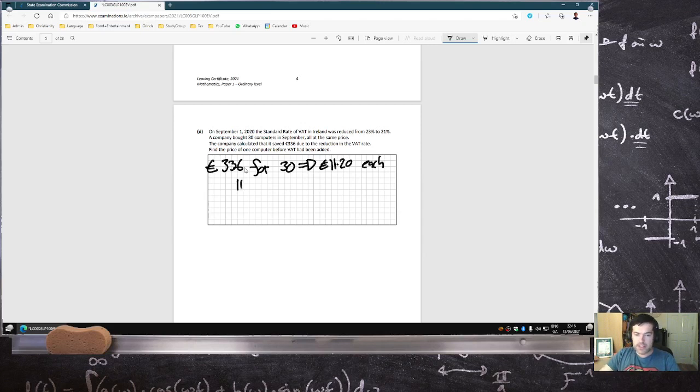That means it's 1120 saved each. Which means 1120 is the 2%. So that means 1% would be 560. So that means 100% would be 560. No, that's not right. Oh yeah, before VAT is added. Yeah.